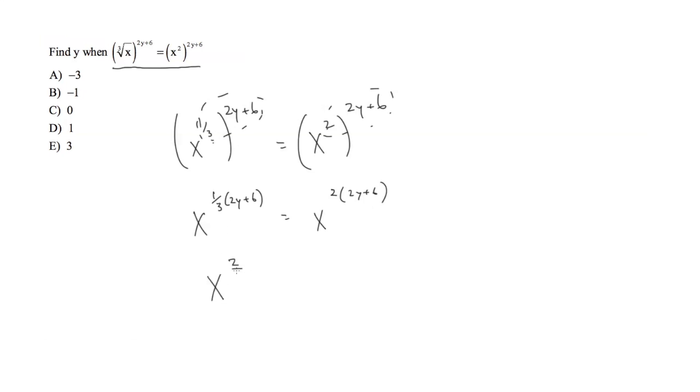Now we can really just drop the x's because what we're really doing is we're just equating the two exponents together. So we have 2/3rds y plus 2 is equal to 4y plus 12.